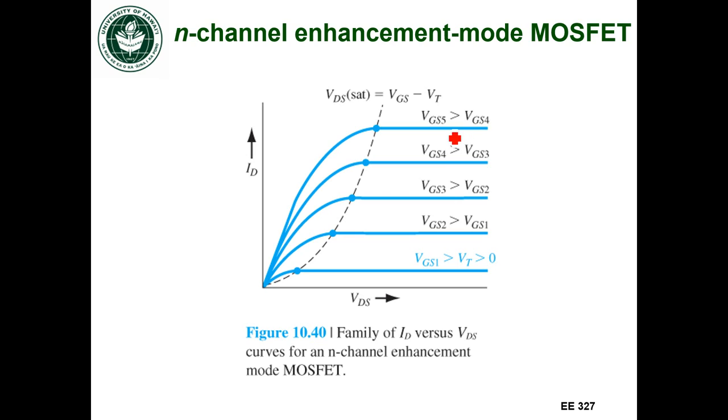So that's what this graph is showing. We're actually missing one here, so if I had VGS less than the threshold voltage, then we said that that current is going to be near zero, so that's all the way down here.